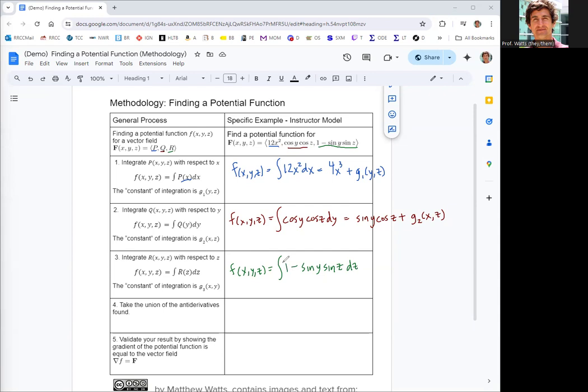So also we have a constant. So the integral of one with respect to z would just be z. And then the second term, negative sine y sine z, think of that as negative sine times a constant. And we already know that the integral of negative sine is cosine. So you get that constant sine y, and then you get a cosine z. The third constant of integration is the function g3, which depends on x and y.